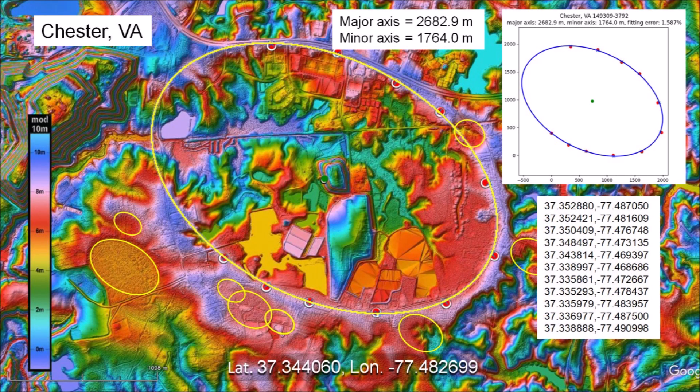Although this terrain is highly eroded, the rim has some well-defined portions and it is possible to fit the points with an ellipse by the least squares method. This Carolina Bay has a major axis of 2,682 meters, which is about 1.7 miles.